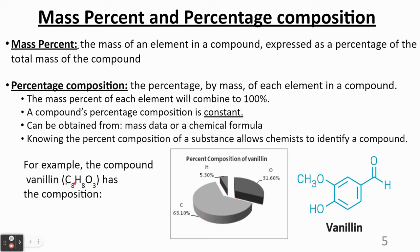So if I said, give me the percentage composition of vanillin, you would tell me, okay, well, in vanillin, carbon makes up 63.10% by mass, hydrogen makes up 5.3% by mass, and oxygen makes up 31.6% by mass.